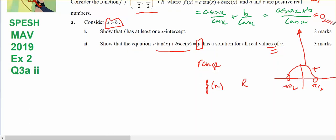I know that it equals zero at least once from part one. And if y can be all real values, and this is an expression for f(x), what I've got to prove is the range is all real numbers. So I want to consider the range.